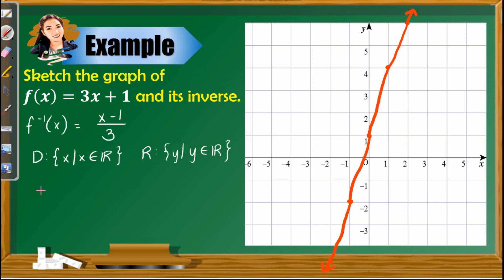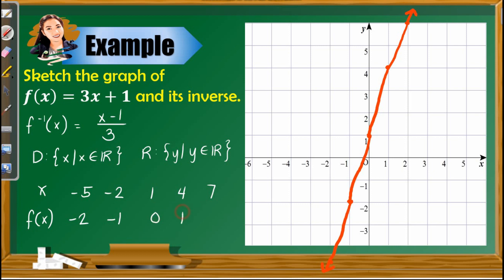For the table of values of the inverse function, instead of plugging in new x values, we simply interchange the x and f(x) values from the previous function. The f(x) values −5, −2, 1, 4, 7 become the new x values, and the original x values −2, −1, 0, 1, 2 become the new f(x) values.